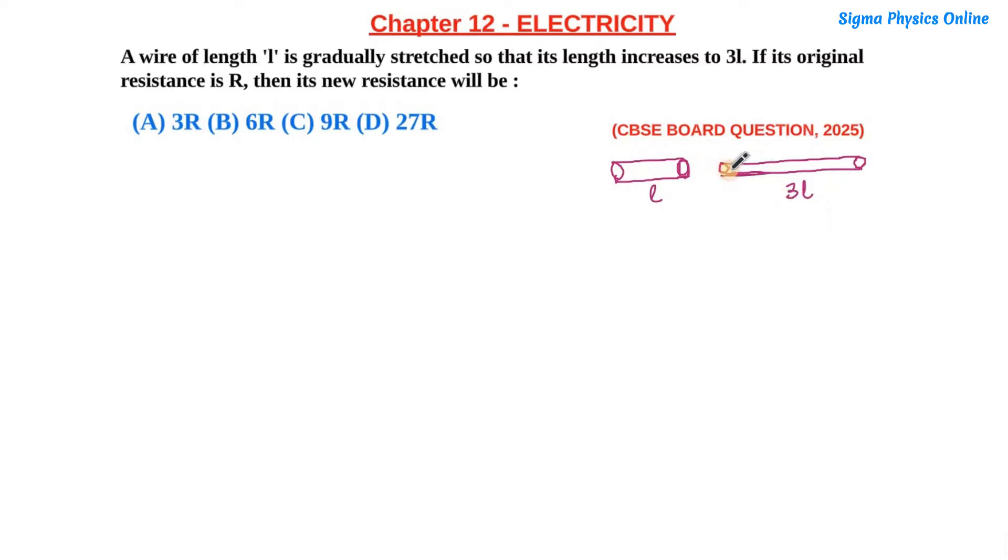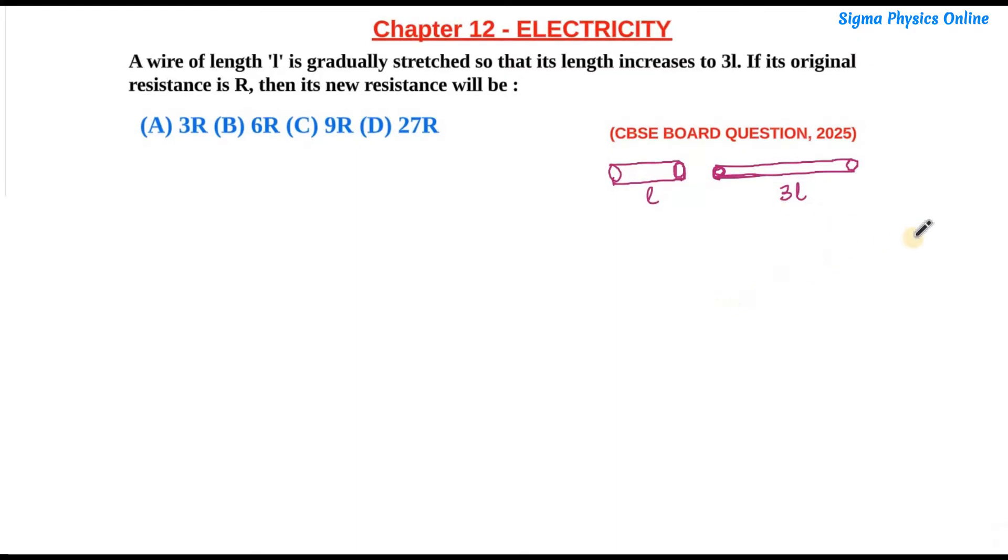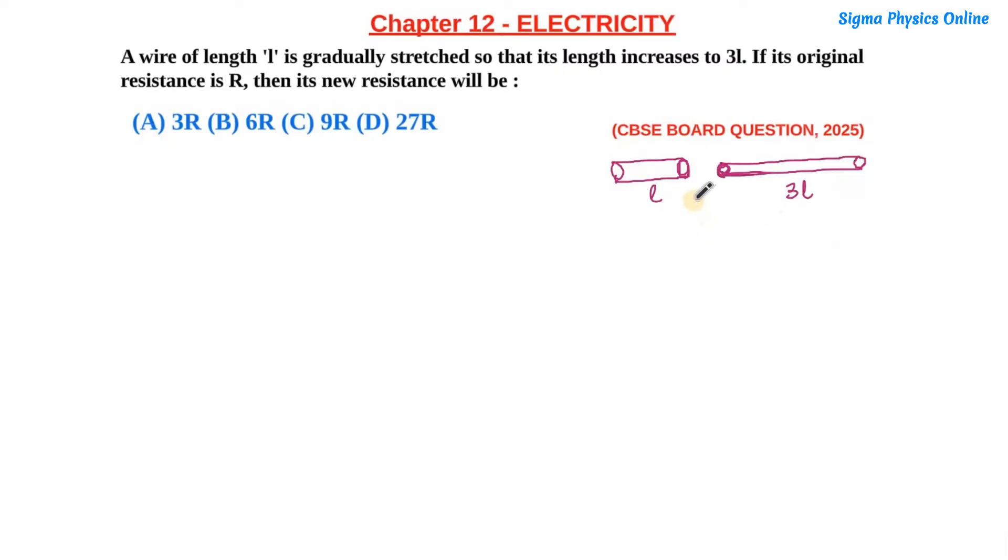The key concept is that both wires will have the same volume because we are not adding or subtracting any mass. We are just stretching the wire to 3 times its length. When we stretch the wire, the length increases but the area of cross-section decreases so that the volume remains constant. With that concept, we will solve this question.